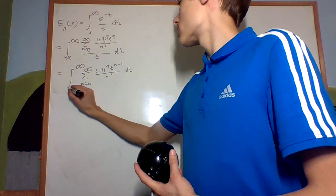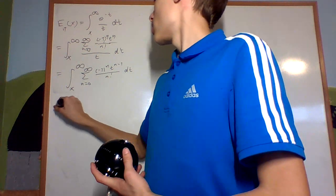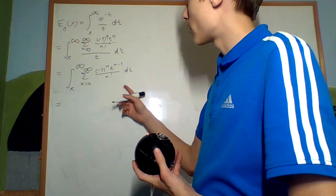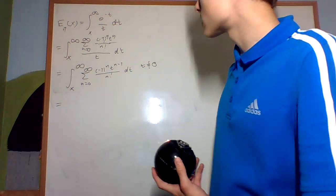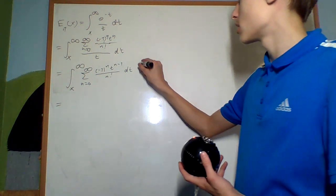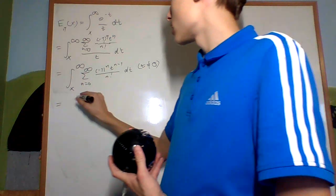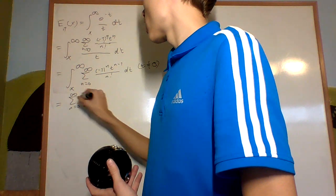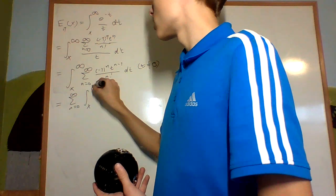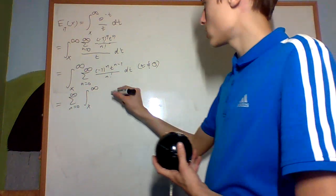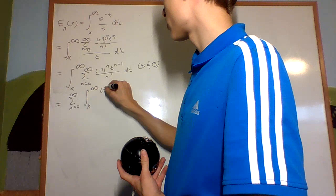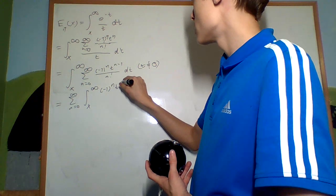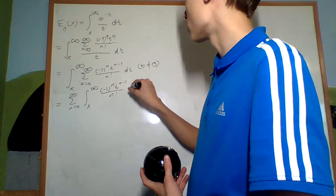So this gives us — because this is absolutely convergent for t not equal to 0 — I can just switch the sum and the integral around. So I'm going to have the sum of the integral from x until infinity of negative 1 to the n times t to the n minus 1 over n factorial dt.